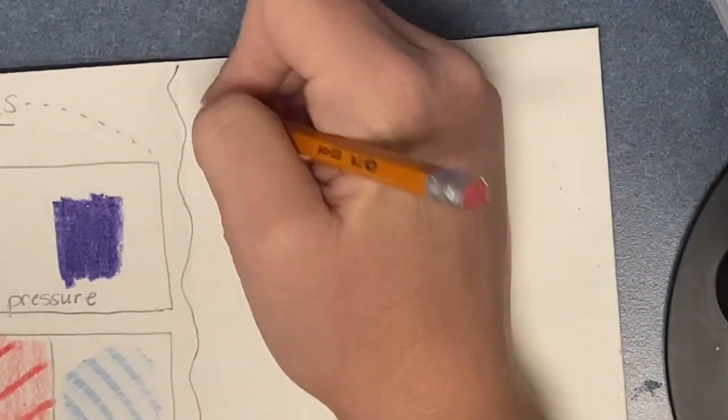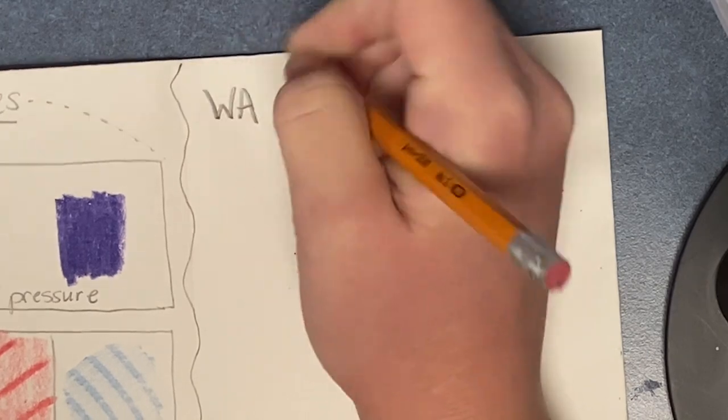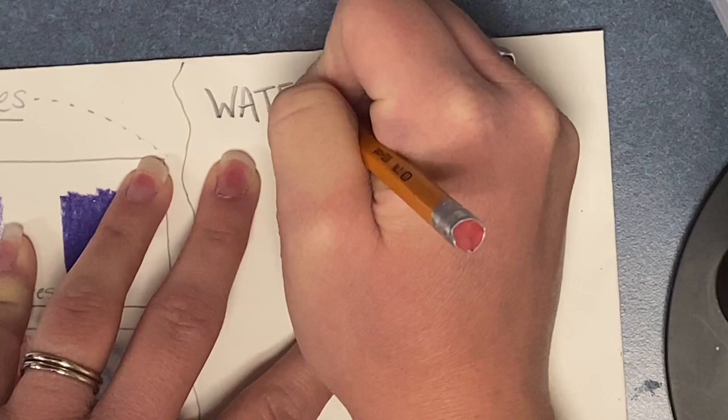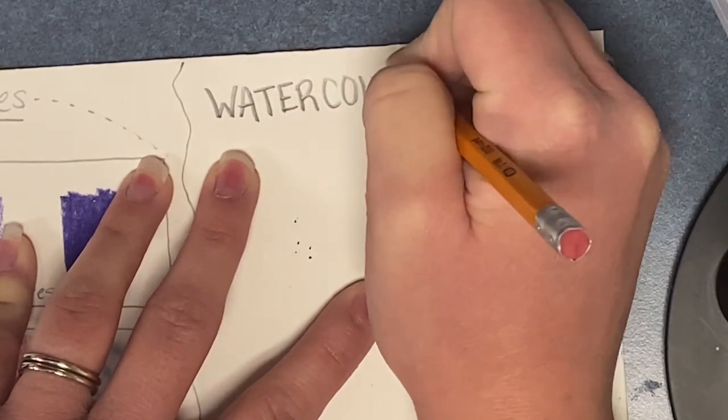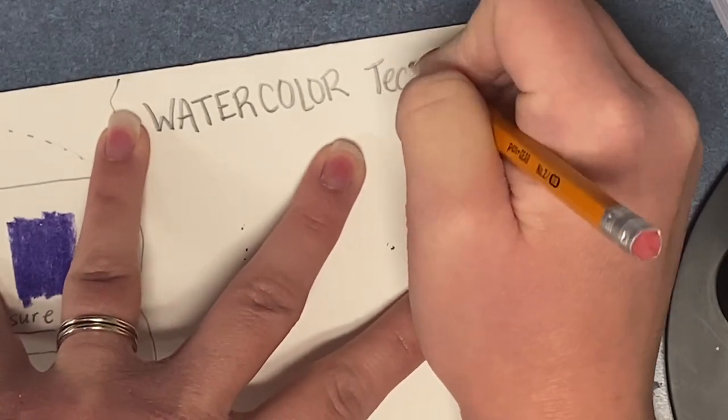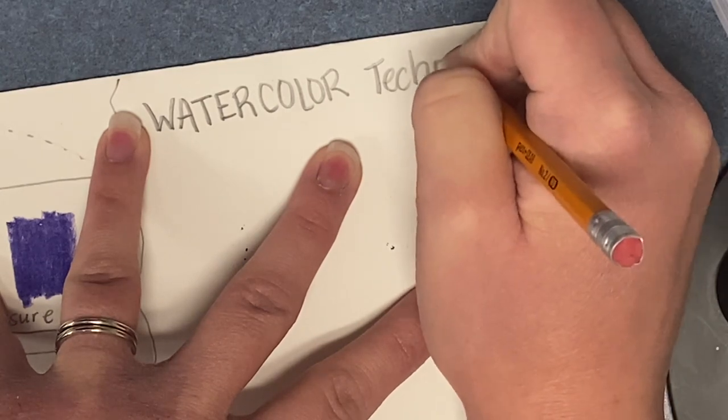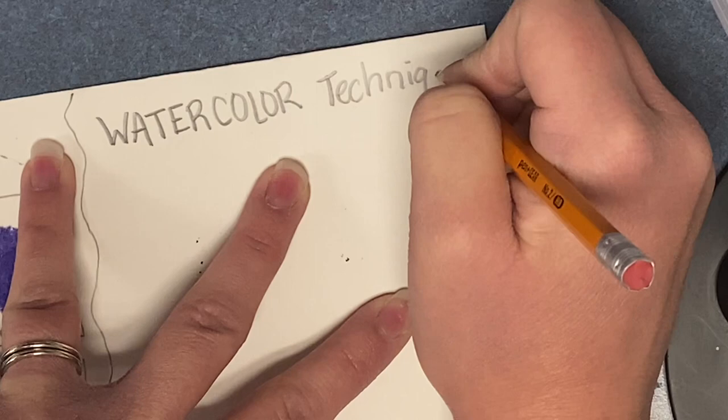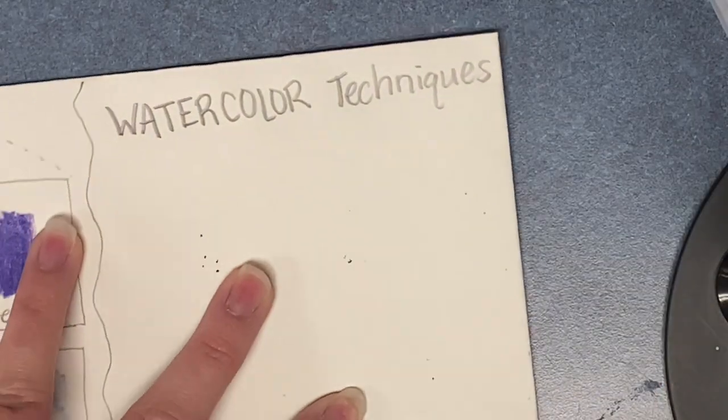we're going to start by writing watercolor techniques. Watercolor is spelled W-A-T-E-R-C-O-L-O-R. And techniques is still written in your book, but I'll spell it T-E-C-H-N-I-Q-U-E-S. Watercolor techniques.